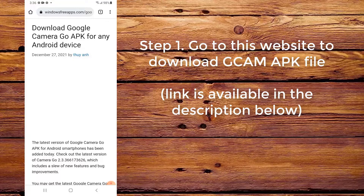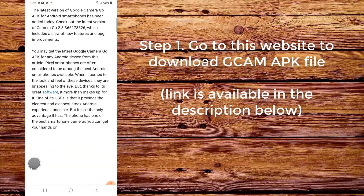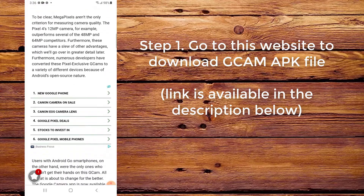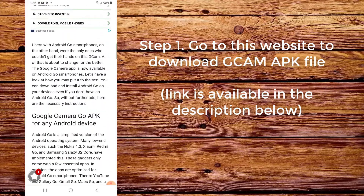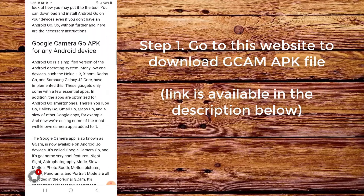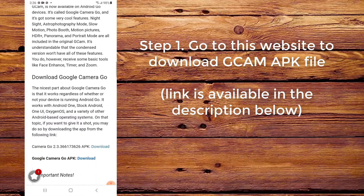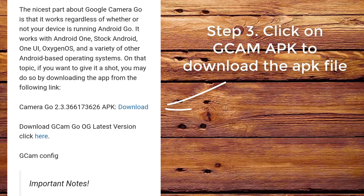Step 1. Go to this website to download the CamApp file. The link is available in the description below. Step 2. If you don't know whether your device supports Camera2 API or not, you can check from here.